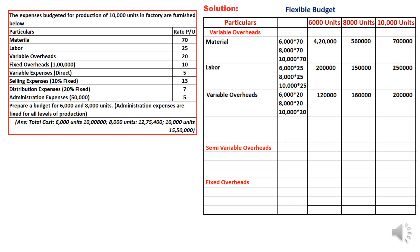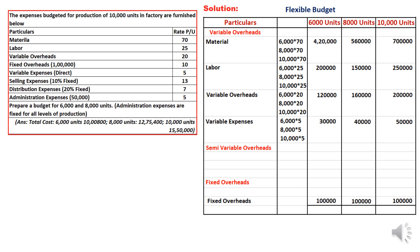Fixed overheads are ₹1 lakh — this remains constant whether we produce 6,000, 8,000, or 10,000 units. Variable expenses direct at ₹5 per unit: 6,000 × 5, 8,000 × 5, 10,000 × 5 — these values are written in the respective columns.